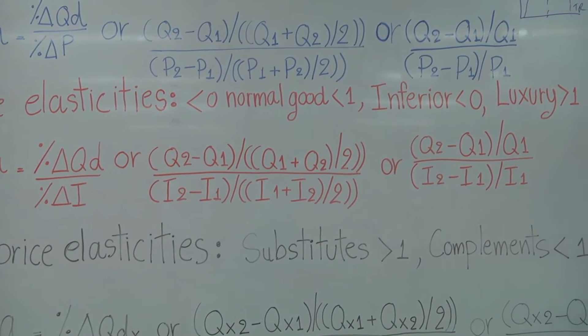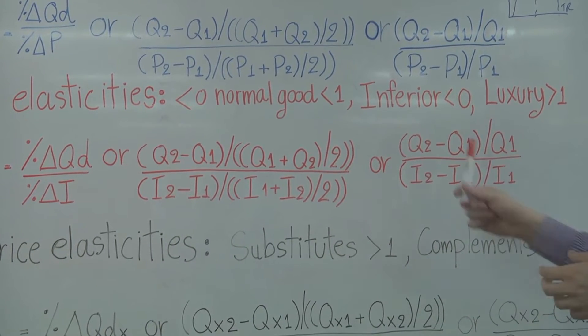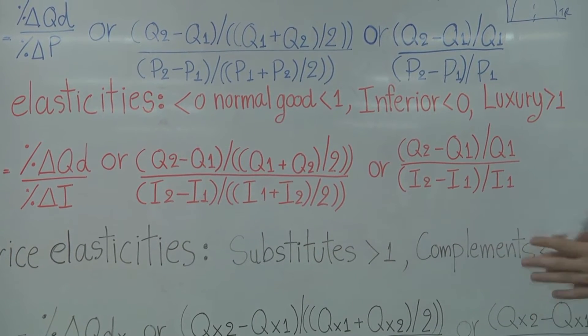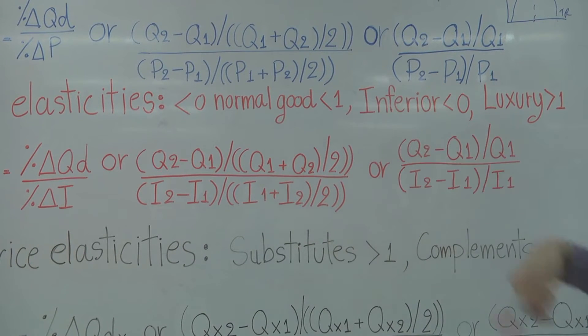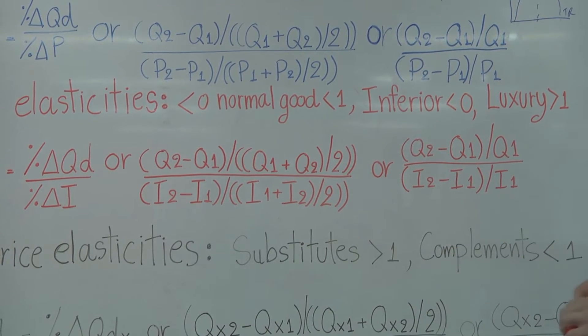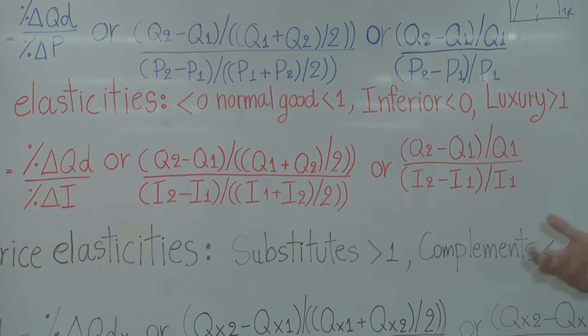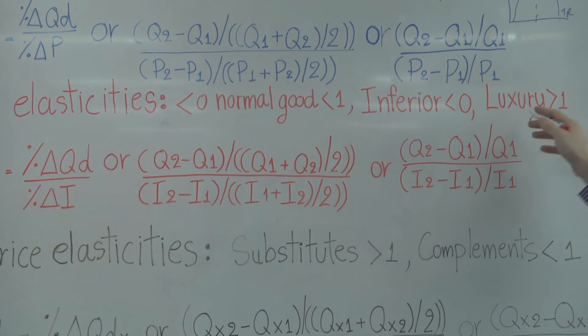So if your answer, if you get a negative answer here, this time we're not going to take the absolute values of our answer. If I get a negative answer, it's an inferior good. An inferior good might be a cup of noodles. So if you make more money, you'll eat less cup of noodles and more of other goods.